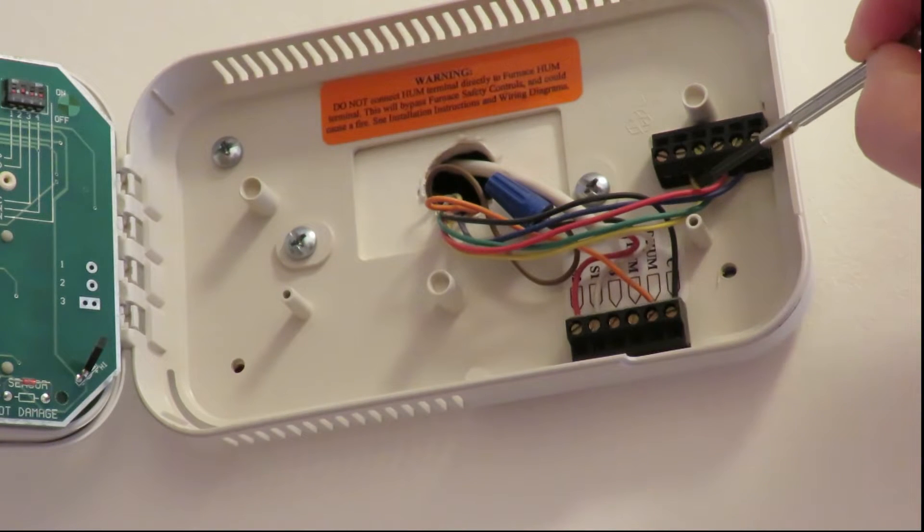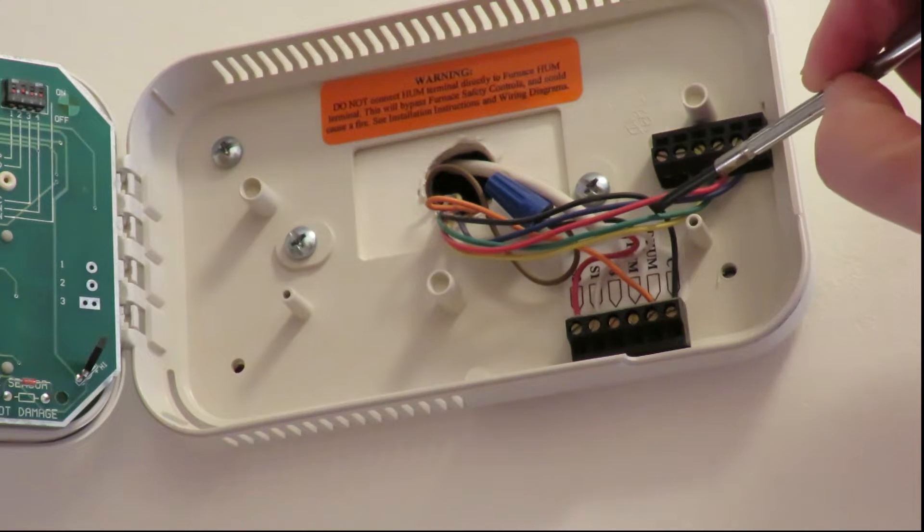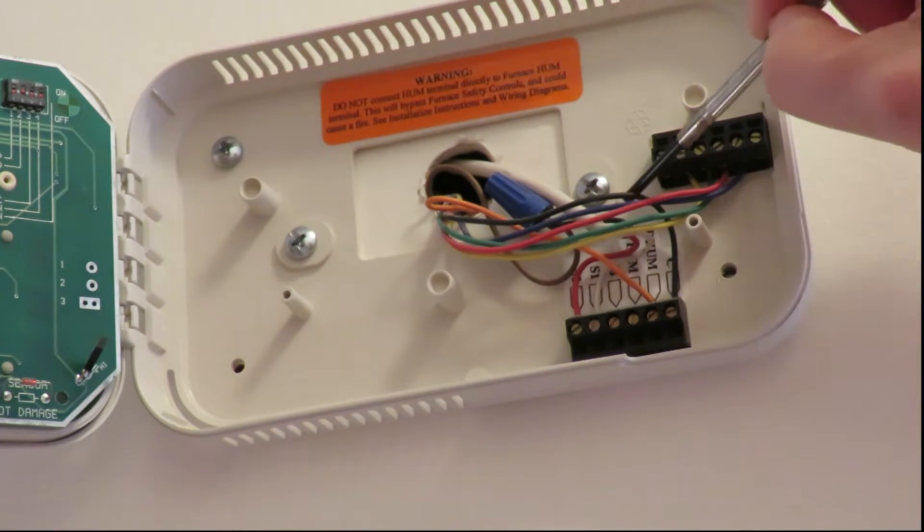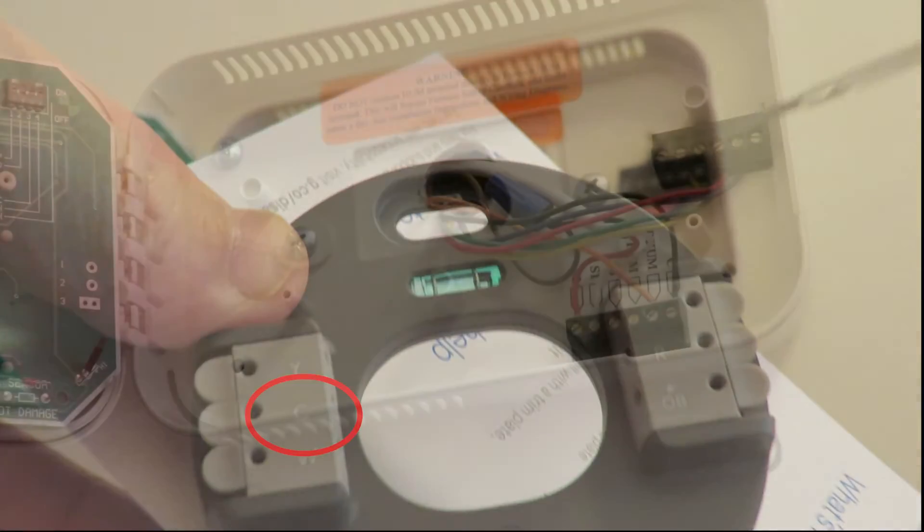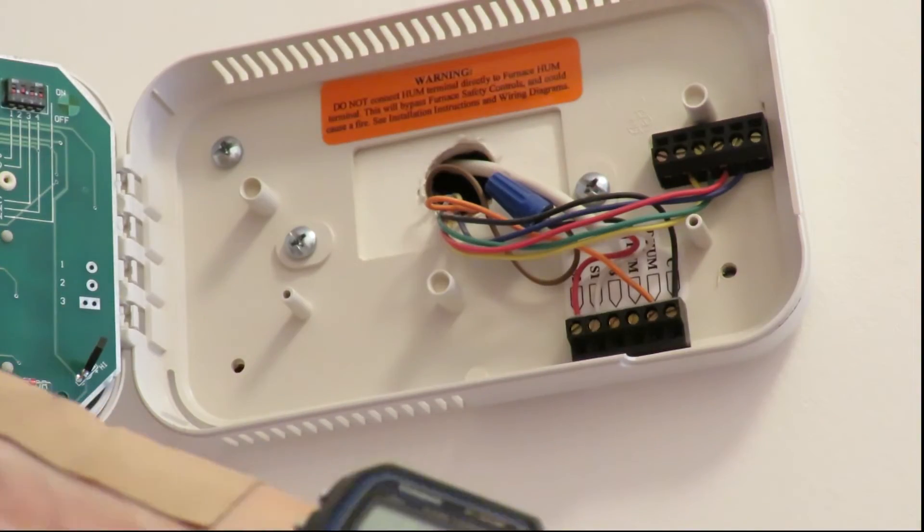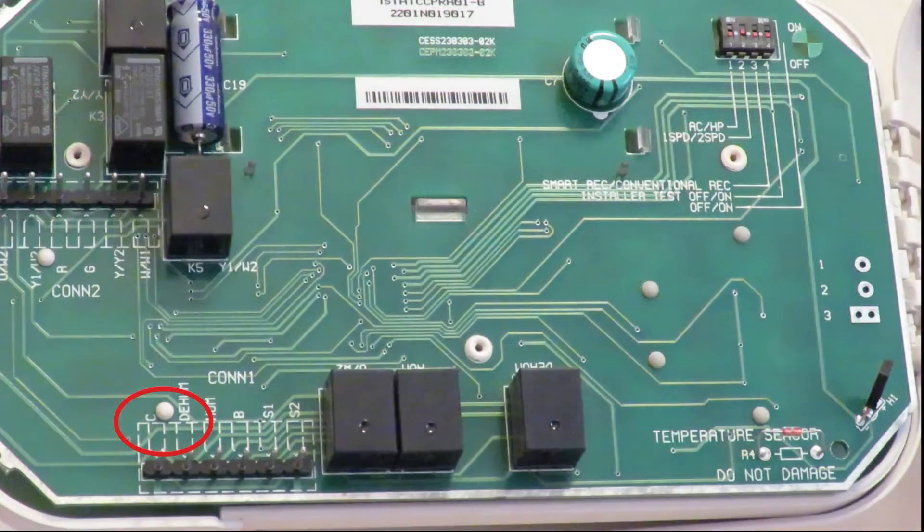Here you can see the blue wire, the red wire, the green wire, the yellow wire, and the black goes to C, which is common. And I can see the C goes right here.